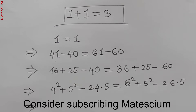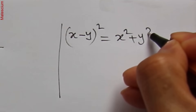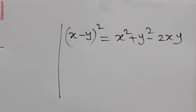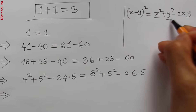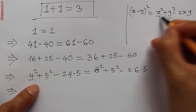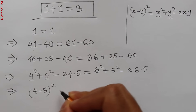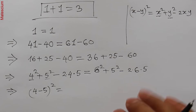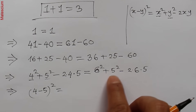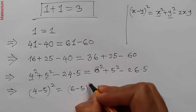Now I will apply the very famous formula: (x minus y) whole squared equals x squared plus y squared minus 2xy. Considering x equals 4 and y equals 5, the left hand side becomes (4 minus 5) whole squared. On the right hand side, applying the same formula gives (6 minus 5) whole squared.